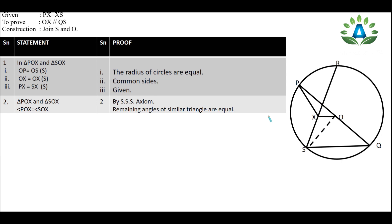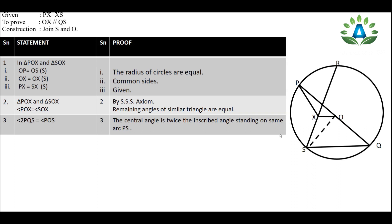Since the two triangles are proven similar by SSS, their remaining angles are also equal. Therefore, angle POX in triangle POX equals angle SOX in triangle SXO, because the remaining angles of similar triangles are equal. So we have angle POX equals angle SOX.